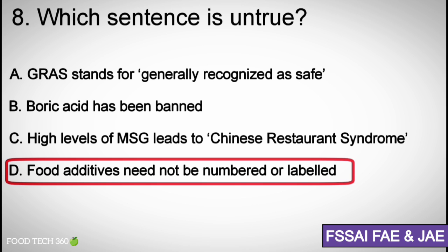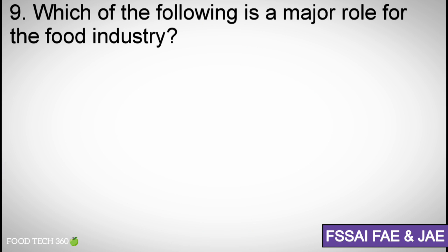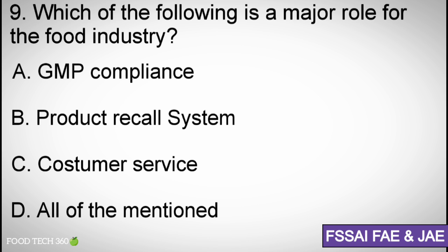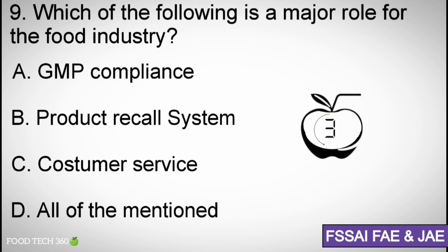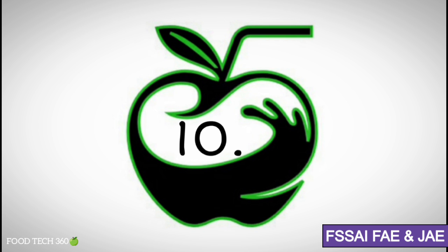Question number nine: Which of the following is a major role for the food industry? Options: A) GMP compliance, B) Product recall, C) Customer service, D) All of the mentioned. Correct answer: D) All of the mentioned.